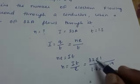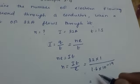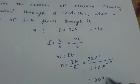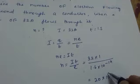Now when you are dividing 32 by 1.6, what do you get? 20 into 10 raised to 19 you will get.